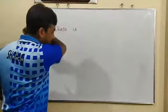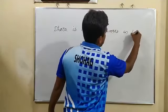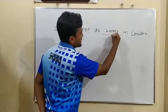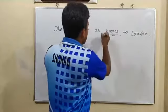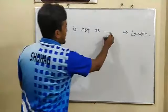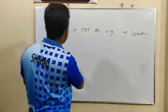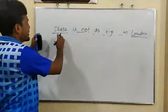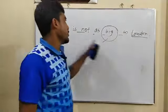Example: 'Dhaka is not as bigger as London.' Is it right? No. 'Bigger' indicates the comparative adjective form. But 'as...as' always indicates only the positive adjective. That is why the right answer is 'big' — 'Dhaka is not as big as London.' We know that London is bigger than Dhaka — that is why 'big' is used as the positive adjective.